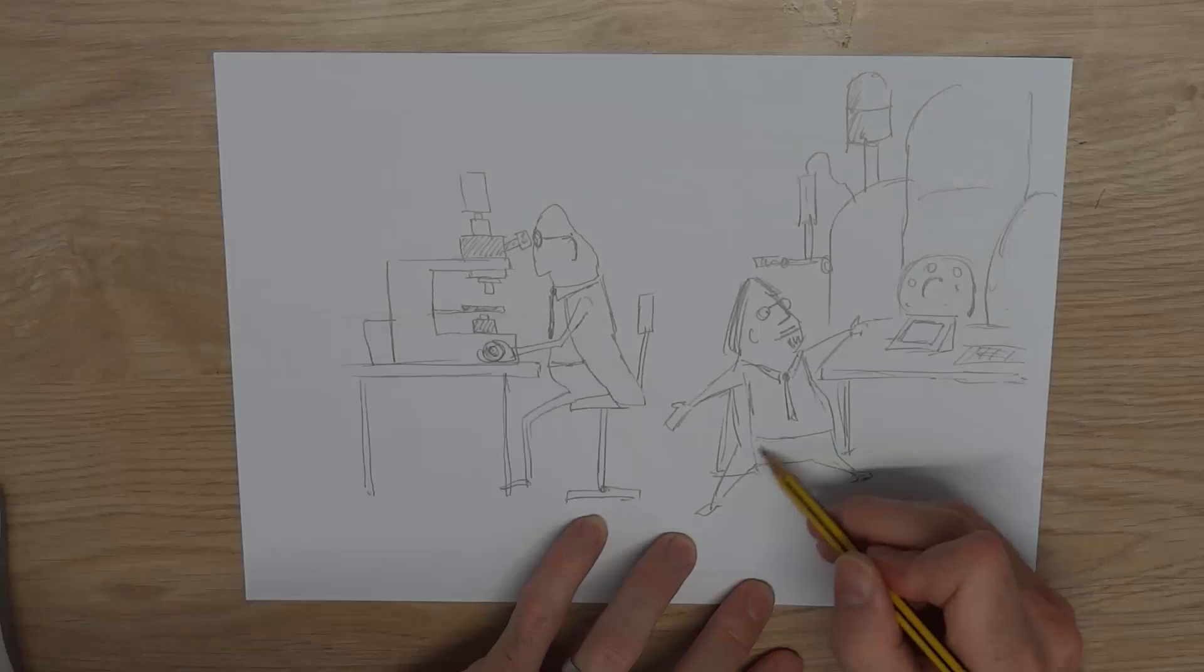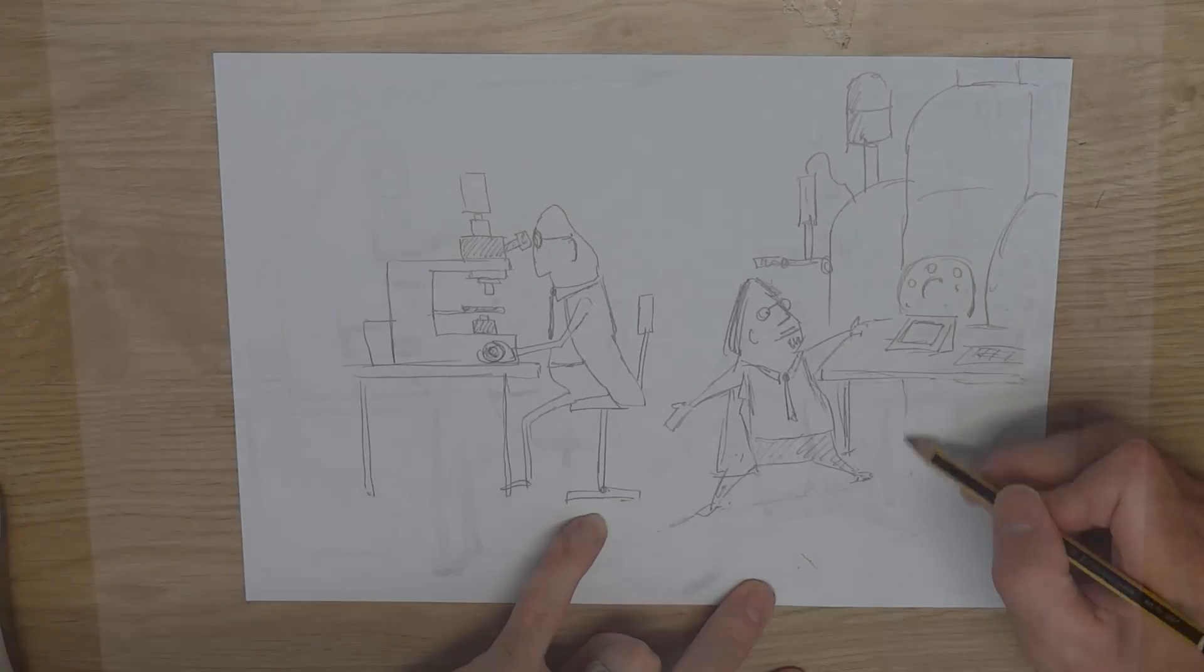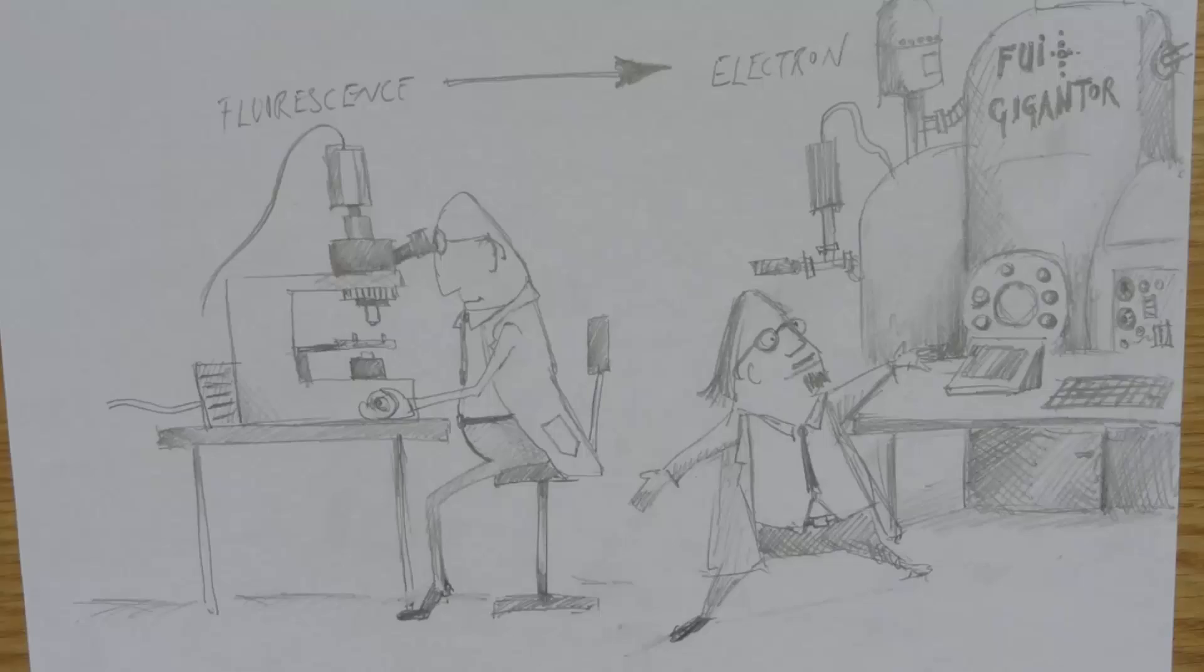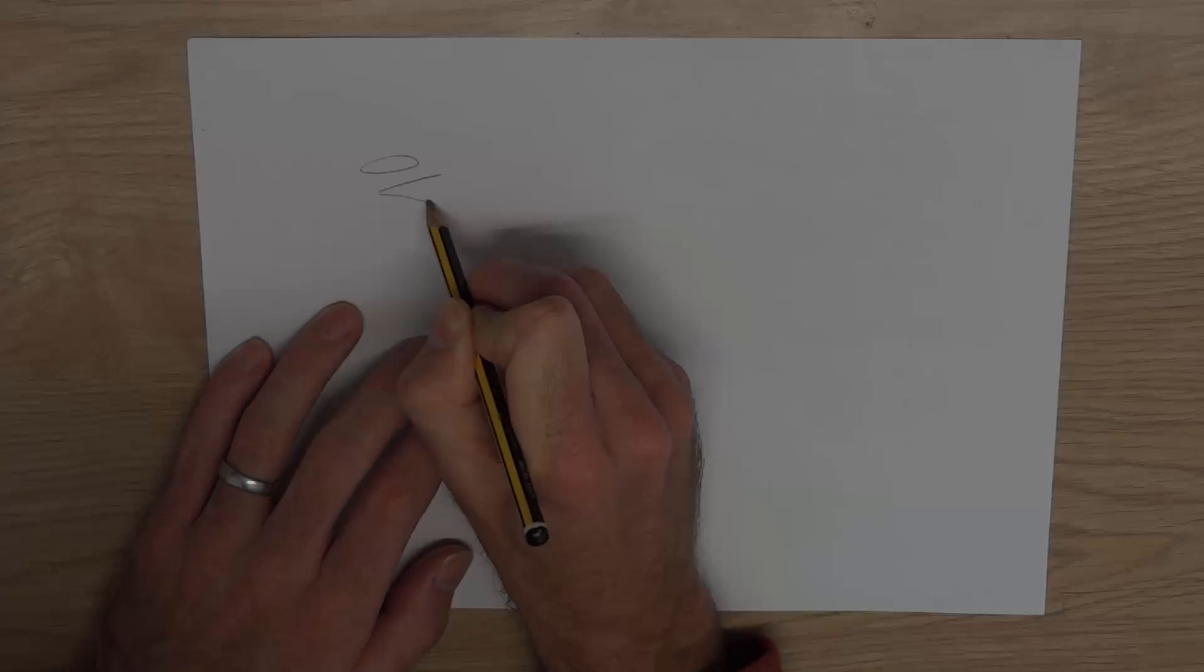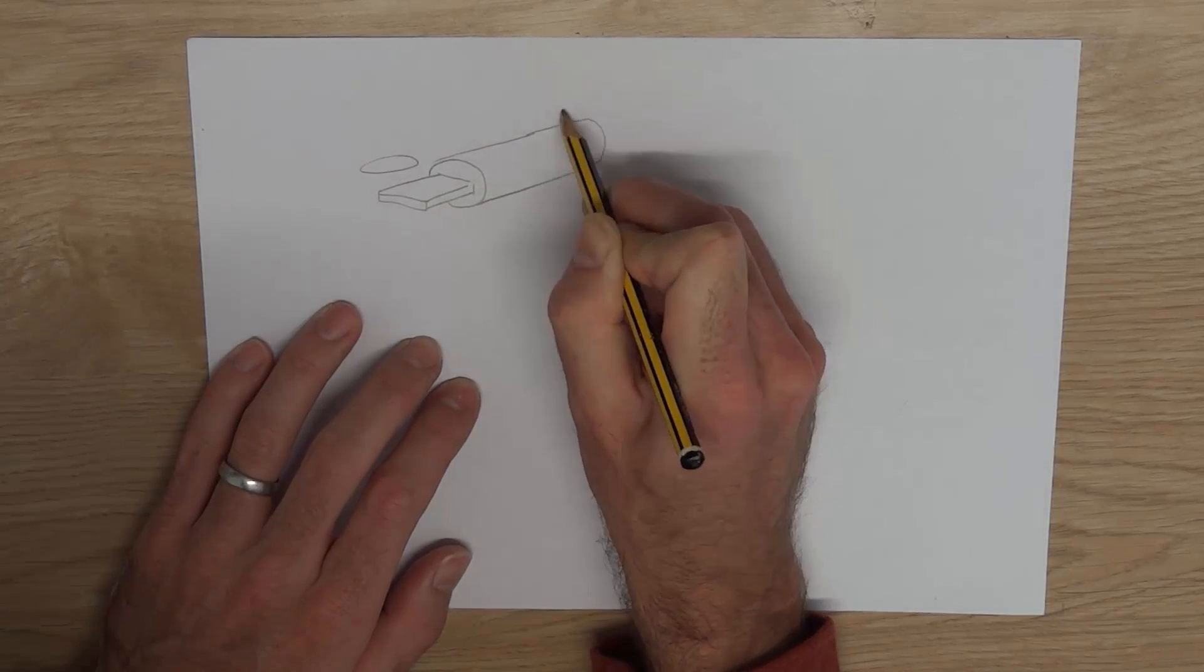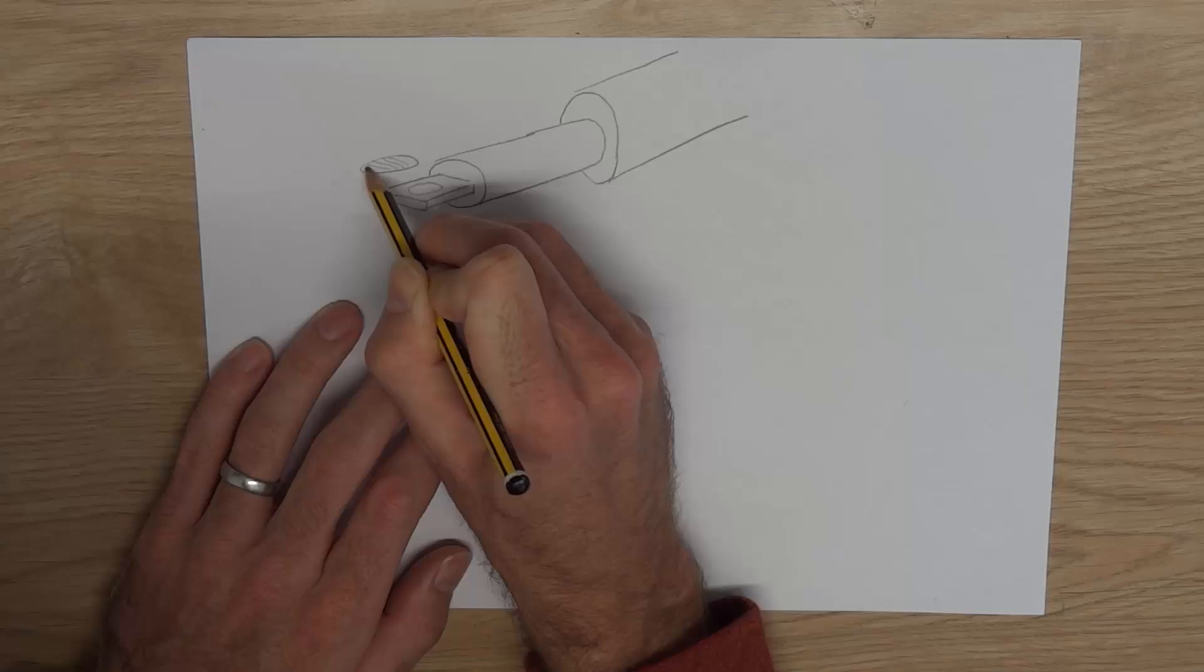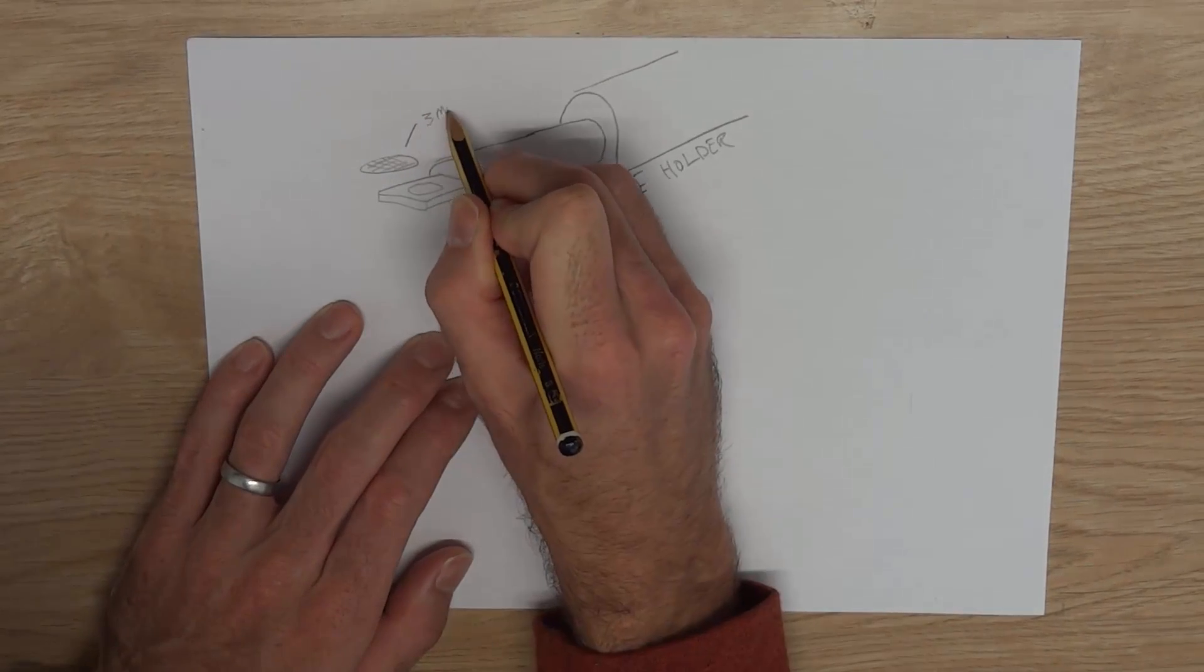For observation on the fluorescent microscope, biological samples such as cells or viruses are labelled with a fluorescent marker to pick out particular biological structures. They are then prepared on a three millimetre diameter copper grid that fits into the end of a long rod-like sample holder which is then loaded into the electron microscope.